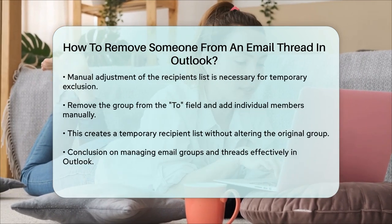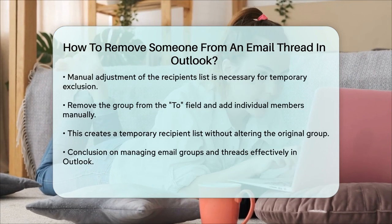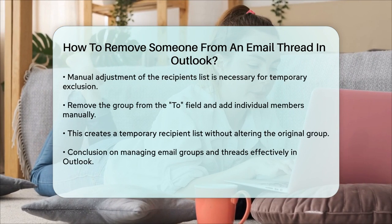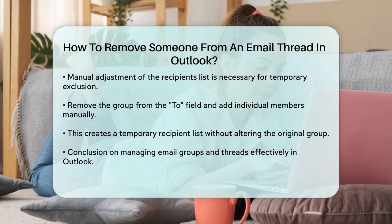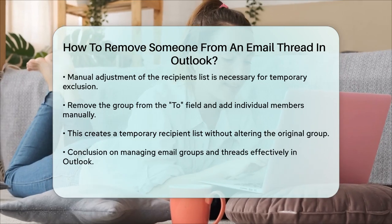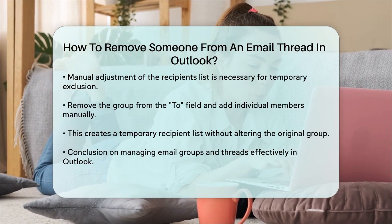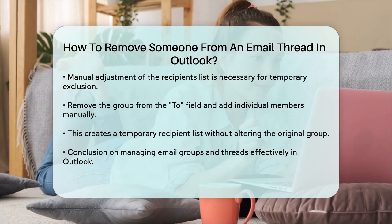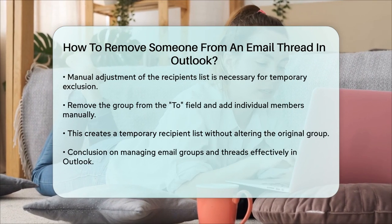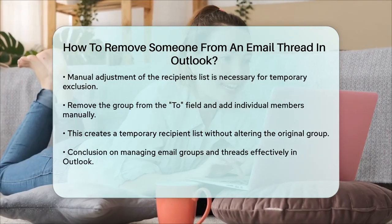This way, you're essentially creating a temporary list for that specific email without altering the original group. In summary, to remove someone from an email thread or group in Outlook, you either edit the contact group directly to remove a member permanently, or adjust the recipients list manually when sending a specific email to exclude someone temporarily. Both methods ensure you can manage your email groups and threads efficiently.